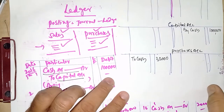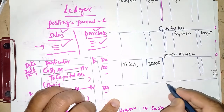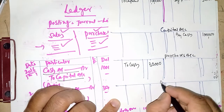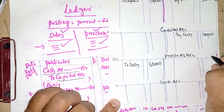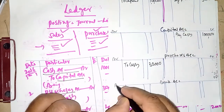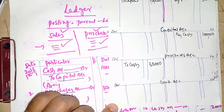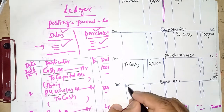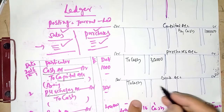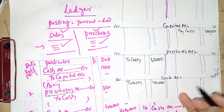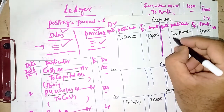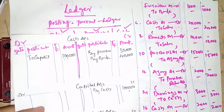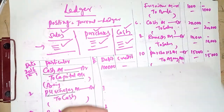Next transaction: Bank Account debit, to Cash Account. We open a new Bank Account. Bank is on the debit side — recorded in Bank Account debit side as 'To Cash — 40,000.' Cash Account is on the credit side — recorded in Cash Account credit side as 'By Bank — 40,000.'